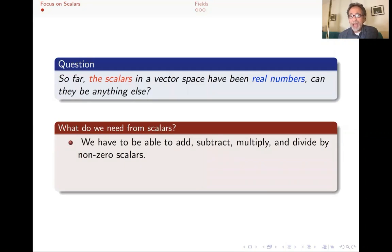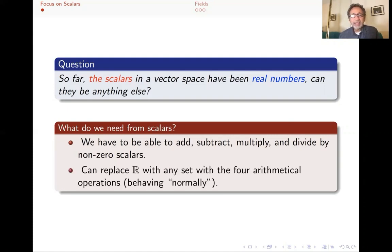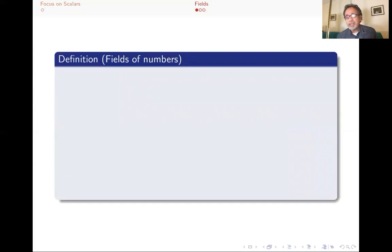We have to be able to add, subtract, multiply, and divide by non-zero scalars. If you look at the kinds of theorems we prove and the things we do with scalars, we should be able to divide by scalars as long as they're not zero, multiply by them, add them, and subtract them. And we can really replace R with any set that has these four arithmetical operations. I'm going to give a definition of a field of numbers.